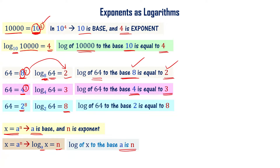For values like log of 64 to base 4 equals 3, or more complex numbers like 3.03 or 3.04, it would be very tedious to calculate on the fly each time. So people have tabulated these values and they call them logarithm tables. When you reach intermediate or degree level, you will understand when and how to use logarithm tables.